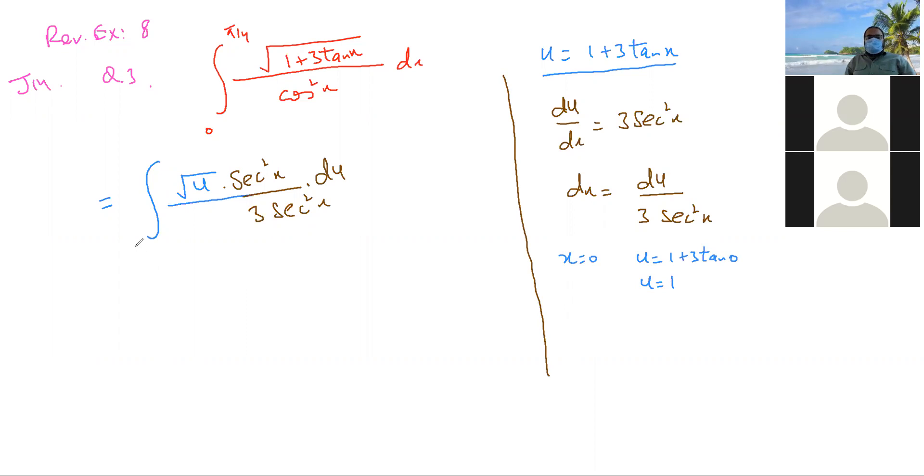Now when your x is pi by 4, your u is going to be 1 plus 3 tan pi by 4. Now if you people look at these limits, these angles which are being used, these are always pi by 2, pi by 6, pi by 3, pi by 4. So these typical angles, they are used. So you must try to learn their values by heart. What is tan pi by 4?